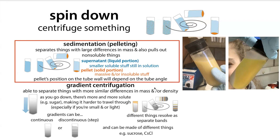This is as opposed to gradient centrifugation, where instead of just sticking your sample in the tube, you place it on top of a gradient made of something like sucrose, and then things separate based on their density. But when we talk about spin down, we're typically referring to a pelleting step, where we're pelleting out the undissolved stuff and leaving the liquid supernatant above it.